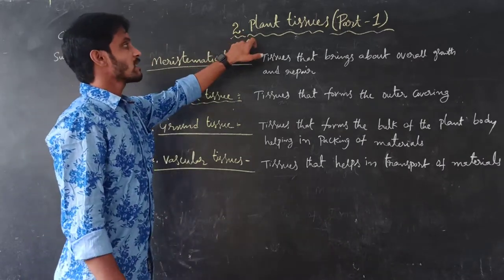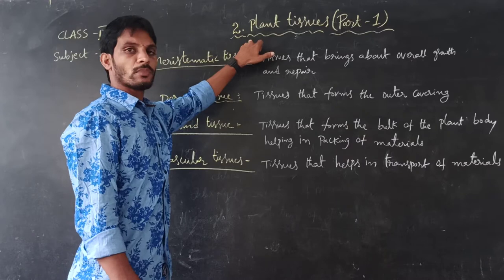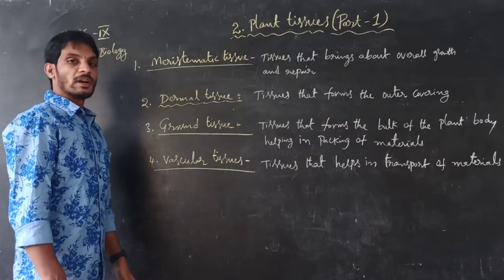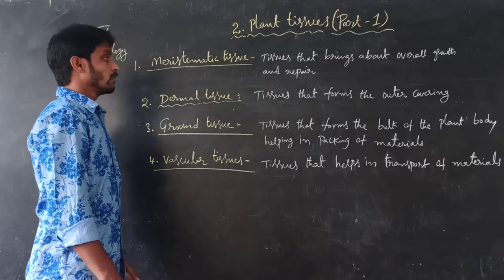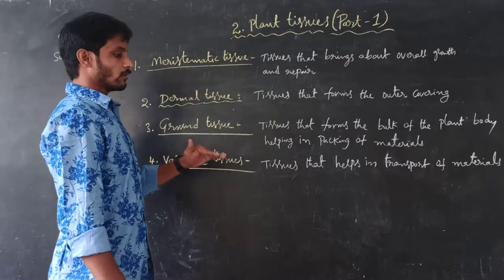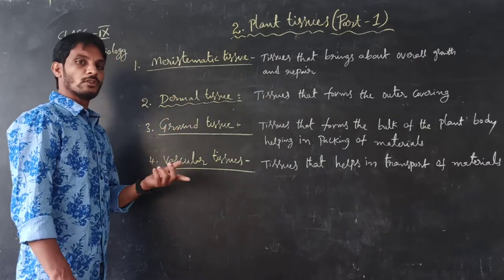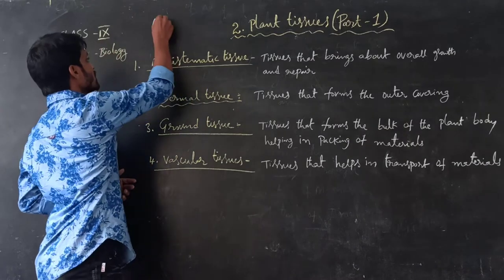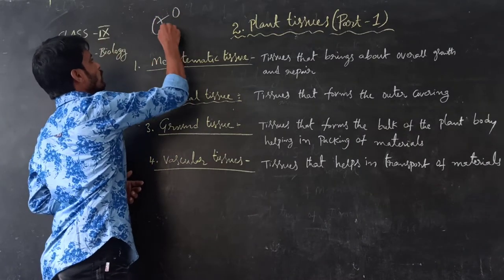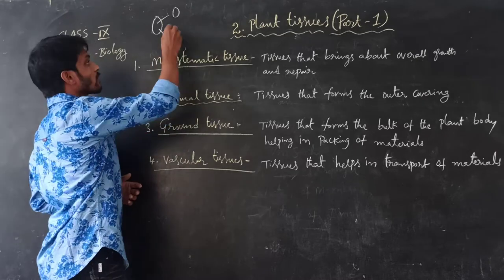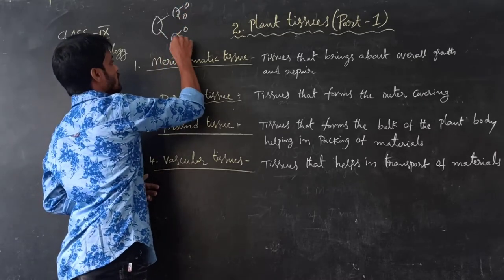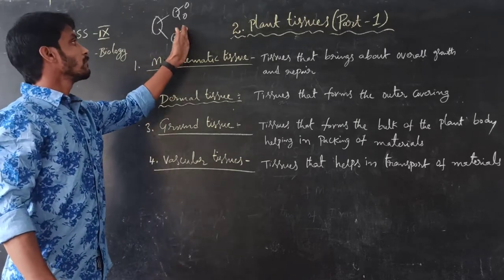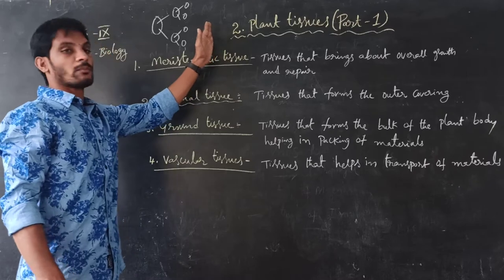Plants are made up of more number of cells. That is why plants are multicellular organisms. A single cell divides into two cells, and again each cell divides into two cells. Like that, the single cell repeatedly divides more and more times, forming more number of cells.